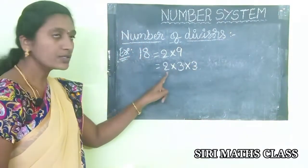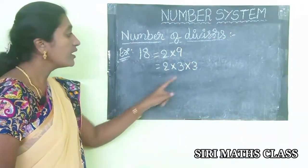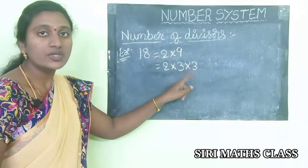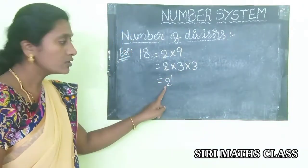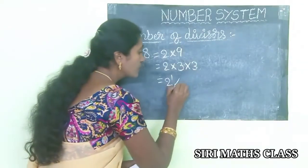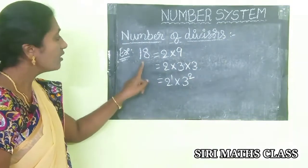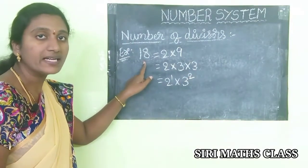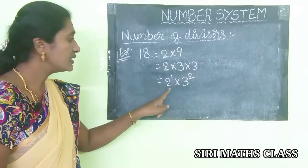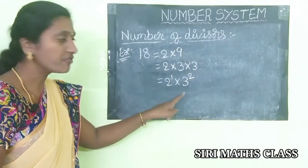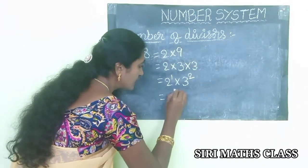Nine converts to three times three. So the prime factors are 2, 3, 3. There are two threes and one two, giving us 2^1 × 3^2. The standard form of 18 is 2^1 × 3^2, which is in the form p1^n1 × p2^n2.